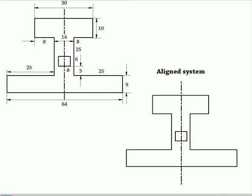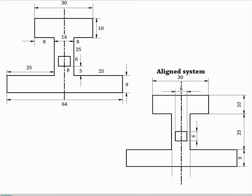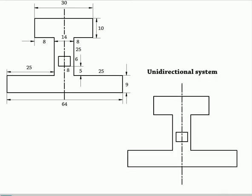Represent the dimensions in an aligned manner. In the unidirectional system, the dimensions are to be represented as per the unidirectional system. In this system, all the dimensions — whether vertical, horizontal, or inclined — should be represented with vertical stroke letters.